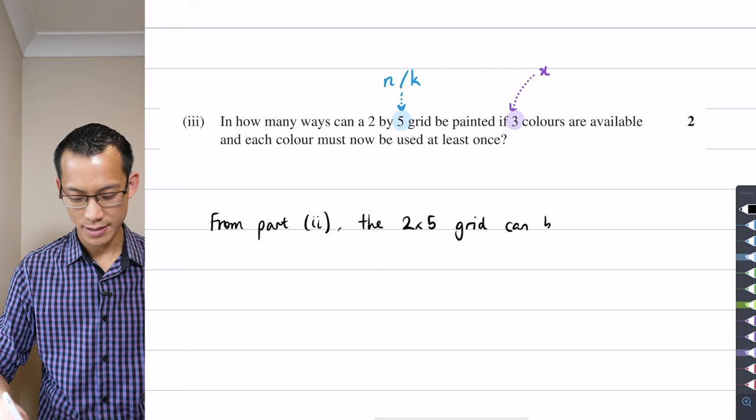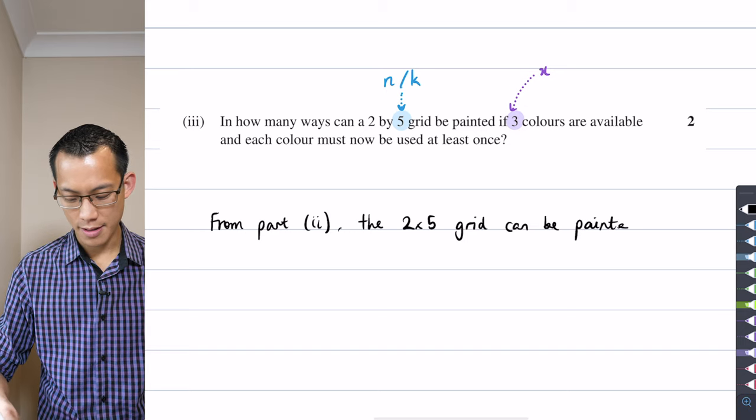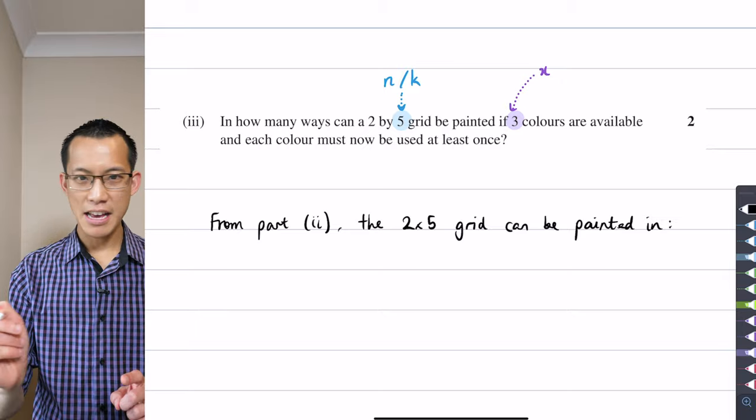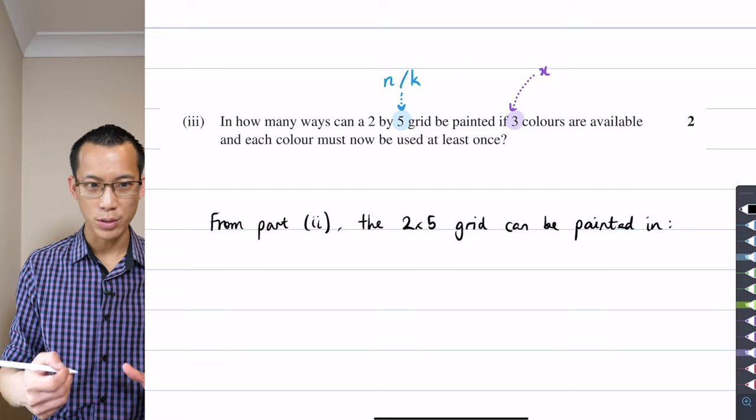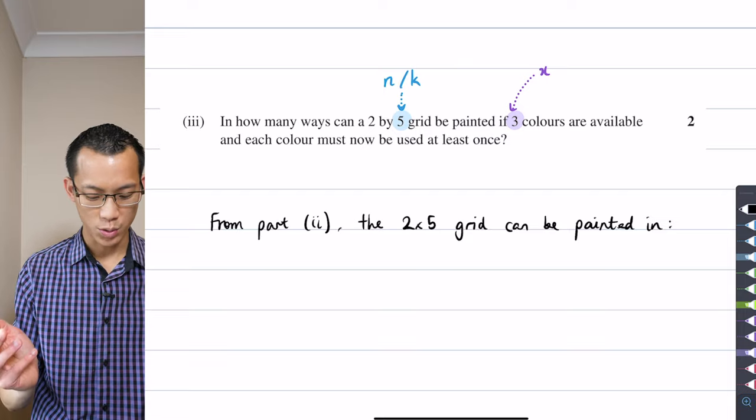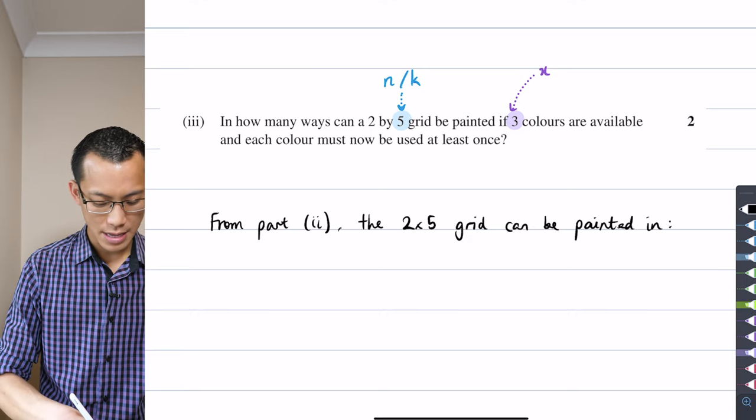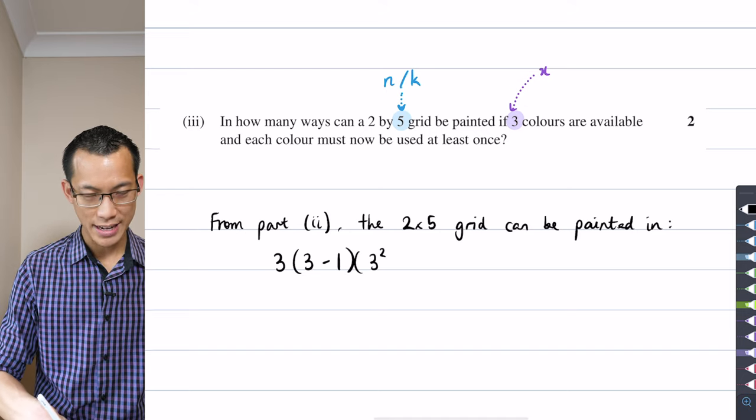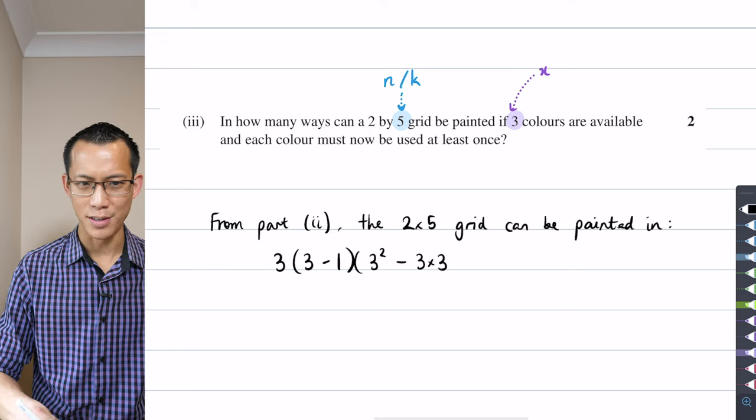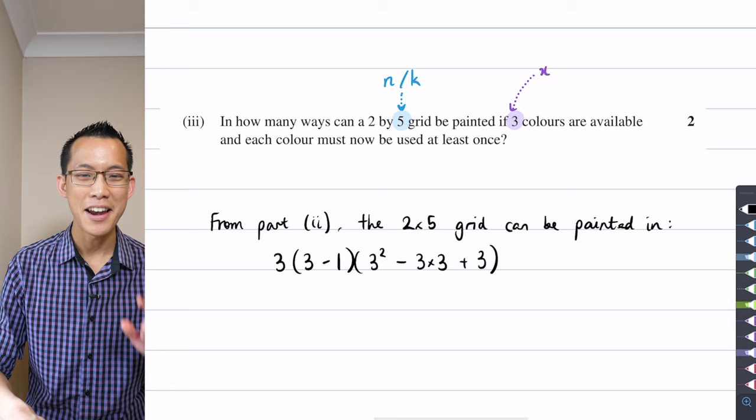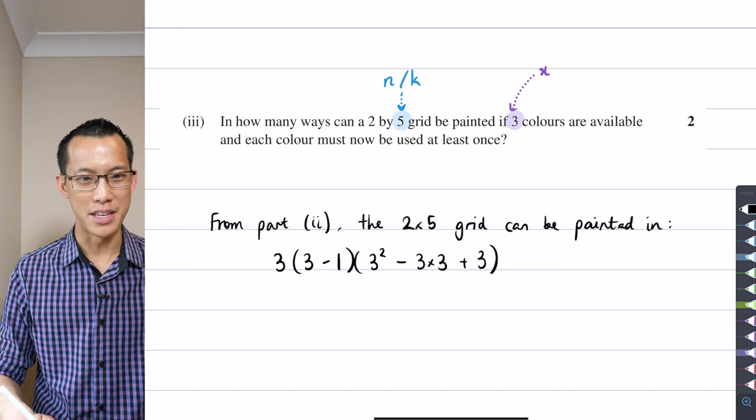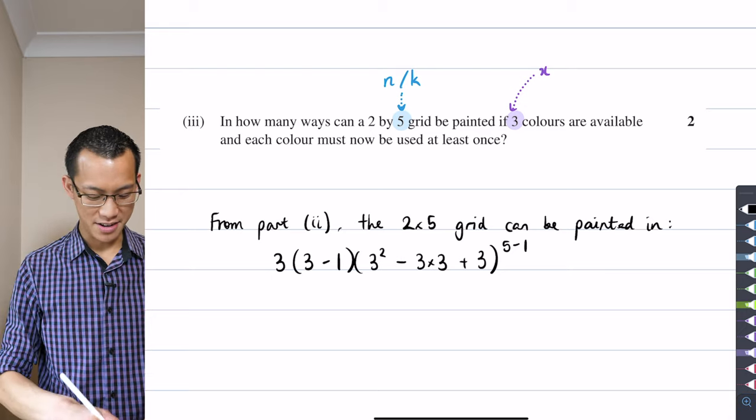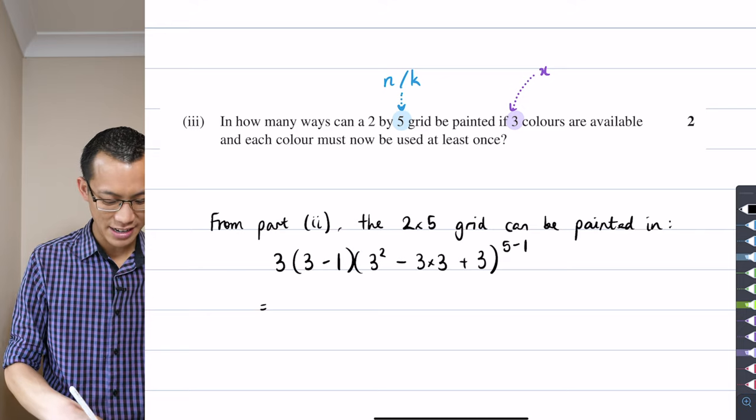Okay from part 2 the 2×5 grid can be painted in how many ways? Let's just go back to that result it was x(x-1)(x² - etc) so I'm going to take all of that with my x equals 3 and my k equals 5 or my n equals 5 so here we go here comes the x here comes the (x-1) here comes the (x² - 3x) this is a lot of 3s plus 3 and then I'm going to raise it to the power of this is where the n comes in right so or the k so this is going to be 5 take away 1.